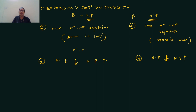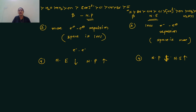And what is the order for the nephelauxetic effect? Since both are inversely proportional, the nephelauxetic effect order is: I⁻ > Br⁻ > CN⁻ > Cl⁻ > oxalate > ethylenediamine > NH₃ > H₂O > F⁻.